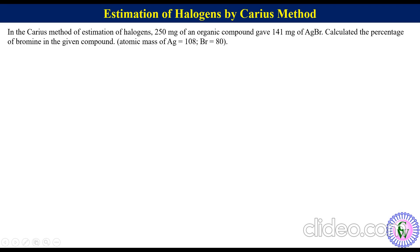Question number two: In the Carius method of estimation of halogens, 250 mg of an organic compound gave 141 mg of AgBr. Calculate the percentage of bromine in the given compound. Atomic mass of silver is 108 and that of bromine is 80.